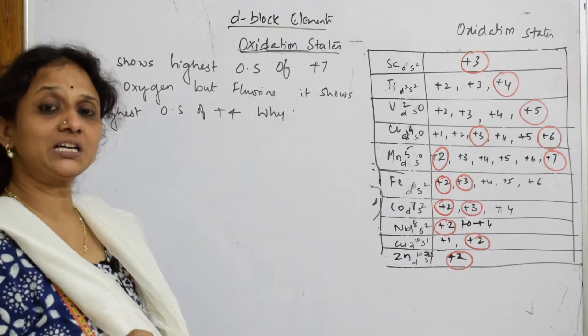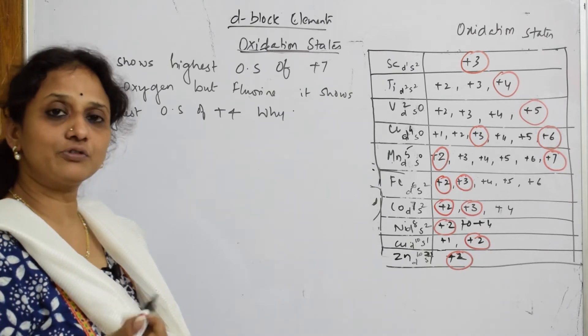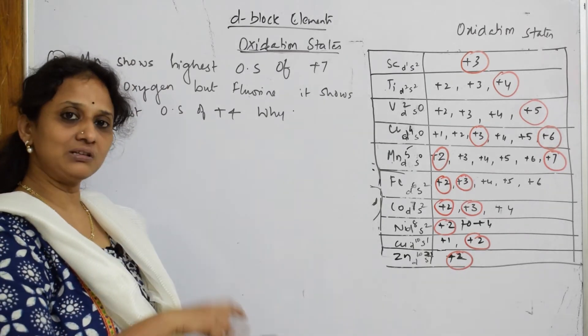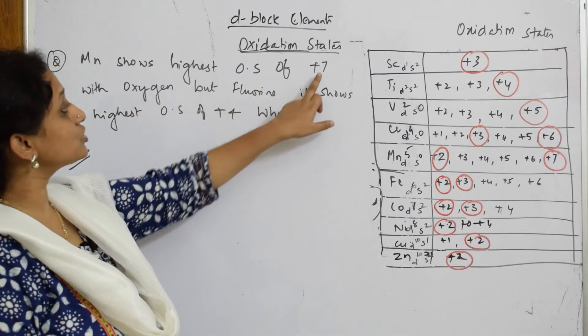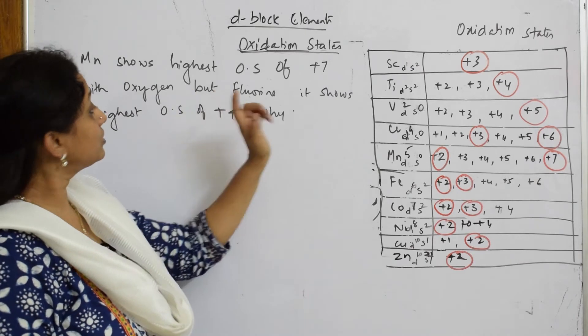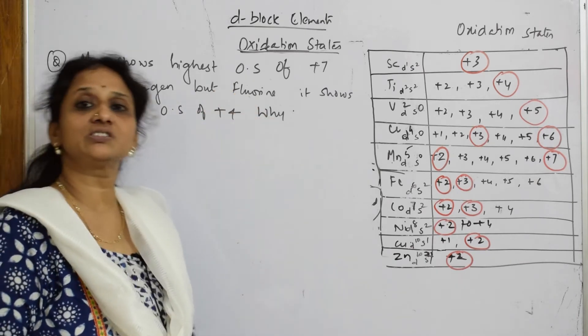As I said, oxygen and fluorine are electronegative in nature and they combine and pull the electron density to form a bond. With oxygen it shows plus seven oxidation state, but with fluorine it shows only plus four oxidation state. What is the reason?